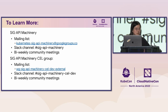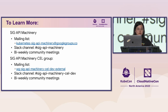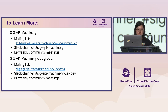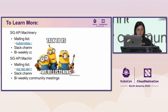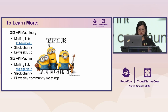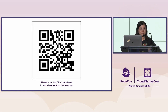All this work has been done under SIG API Machinery. Here is the contact information — they also have a specific CEL working group with a separate Slack channel and mailing list. Please feel free to reach out if you find this useful. Thank you so much, and I'm open for questions.